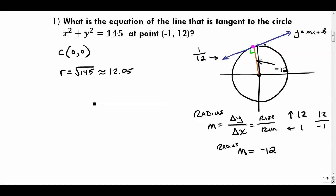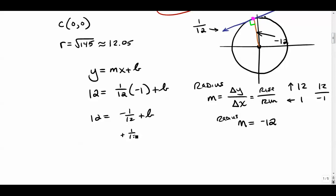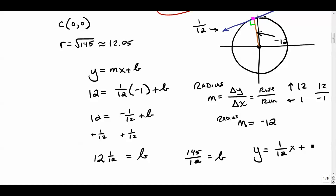Using y = mx + b with slope m = 1/12, and plugging in the point (-1, 12): 12 = (1/12)(-1) + b, so 12 = -1/12 + b. Adding 1/12 to both sides gives b = 12 and 1/12, which is 145/12. So the final answer is y = (1/12)x + 145/12.